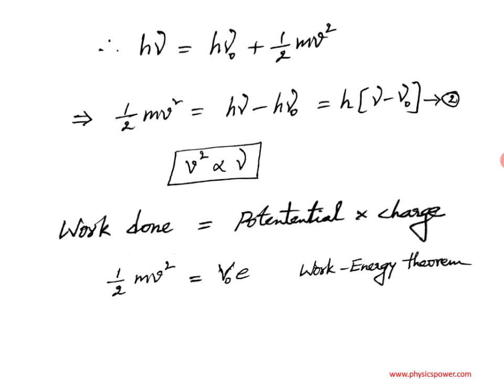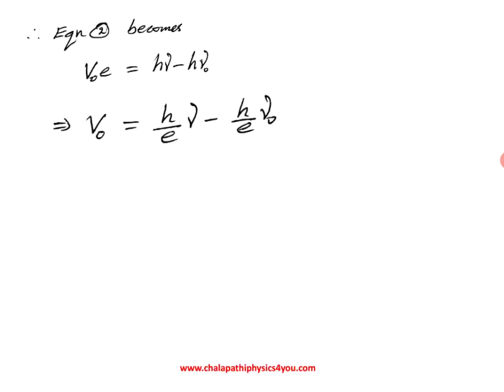Therefore, ½mv² equals V₀e, where V₀ is the stopping potential and e is the electron charge. According to the work-energy theorem, the equation becomes V₀e = hν - hν₀. Shifting the electron charge to the left side, the stopping potential V₀ = (h/e)ν - (h/e)ν₀. Stopping potential and frequency are directly related variables.